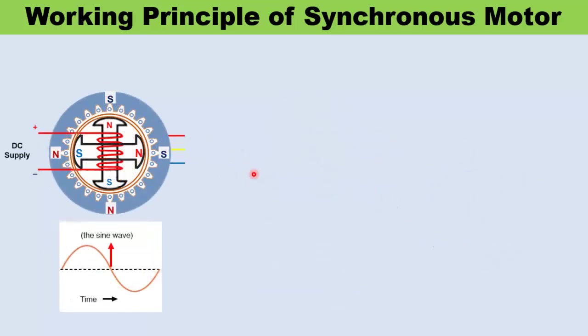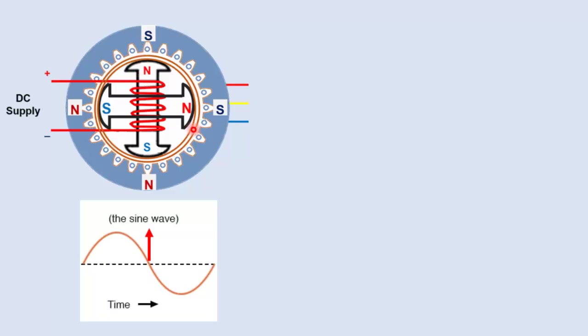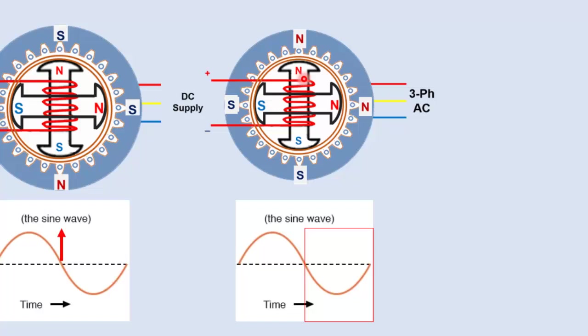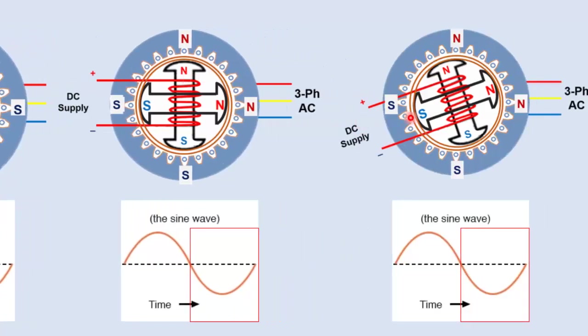This is the starting point at the end of positive cycle where opposite poles align with each other. As the negative cycle starts, the stator again changes its poles and now north pole appears at the top. During negative cycle, the north pole of stator repels the north pole of rotor and thus reverses the direction of motor.